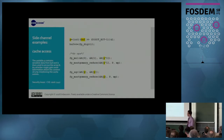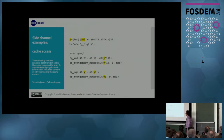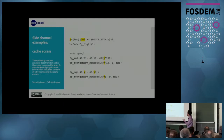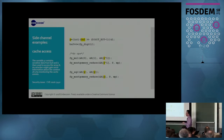Another example of a timing side channel happens when we use sensitive data to access memory. In this example, the highlighted variables are the sensitive ones. Y, while containing sensitive data, has been used to access array R. An attacker who has access to the system or can influence the cache may determine the content of Y by monitoring cache hit or cache miss events.